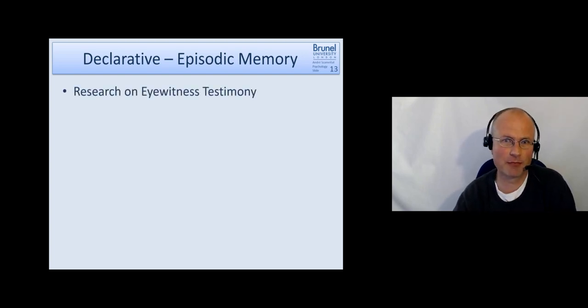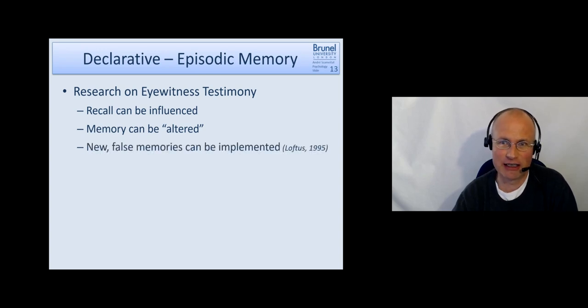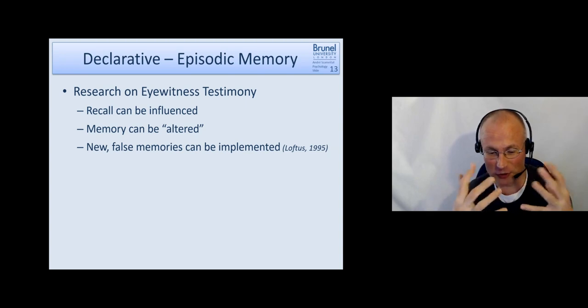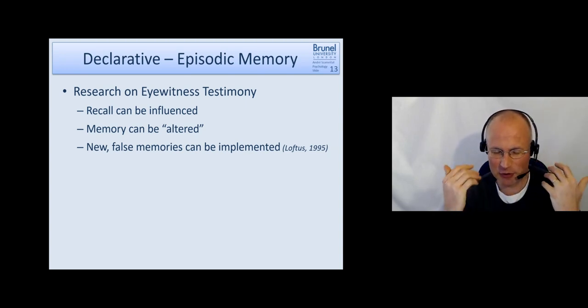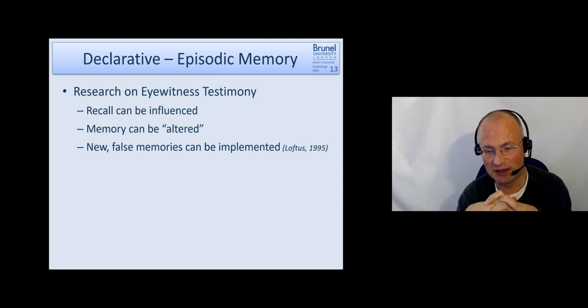This research has shown that the recall can be influenced and memory can be altered. There are even more extreme examples where people try to implement completely new false memories into people's minds, using the family of the participant, trying to convince them that they had an episode in their life as a child—that they were lost in a shopping mall. If you do it in a smart way, then some people will start to believe 'oh yeah, that must have happened.'